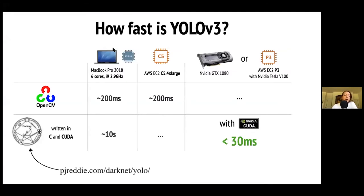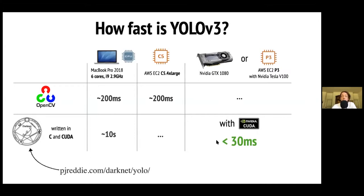How fast is YOLO? On a MacBook Pro 2018 using the OpenCV implementation with CPU, it's optimistically 200 milliseconds — we saw it took 260, depending on the image. To get similar performance on the cloud, we need a C5 4xlarge. But YOLO really shines with GPUs. With an NVIDIA GTX 1080 and Darknet — written in C and CUDA — we're able to run detection at less than 30 milliseconds, meaning more than 30 frames per second.